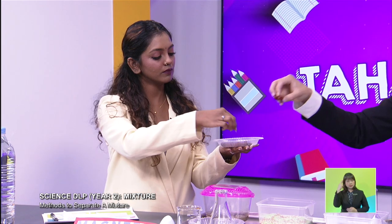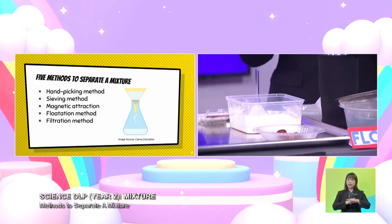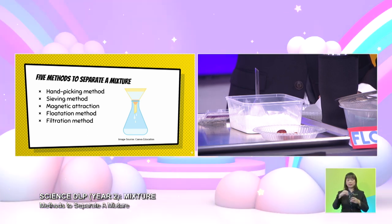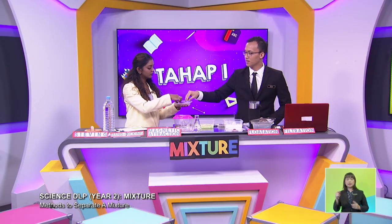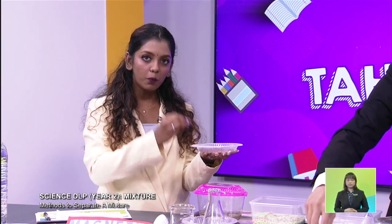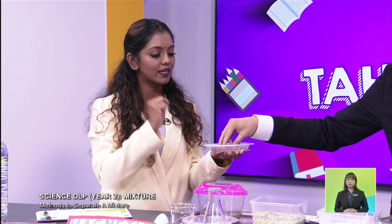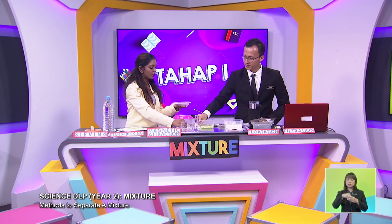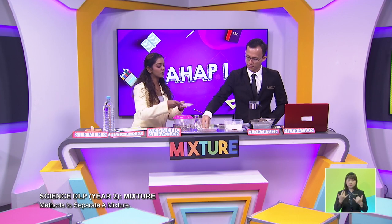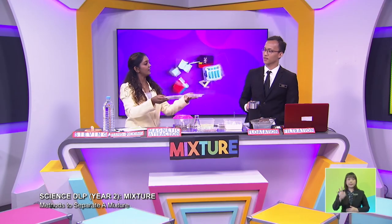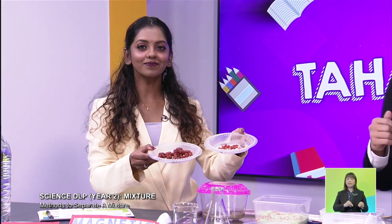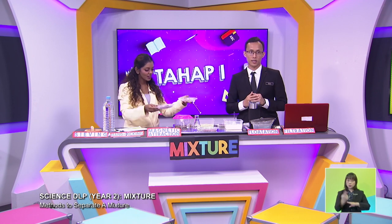The reason why we are using this method — the hand-picking method — is because both goji berries and the red dates are large in size and they have different shapes. So we can easily identify them. Basically, because it's larger in size and easier for us to identify the shape of both the berries and the dates, so it's easier for us to hand-pick. If one of them is in a powder form, it's going to be tough. So now that we have separated them, this is the hand-picking method. I hope everyone at home can use this method when separating bigger, larger objects.